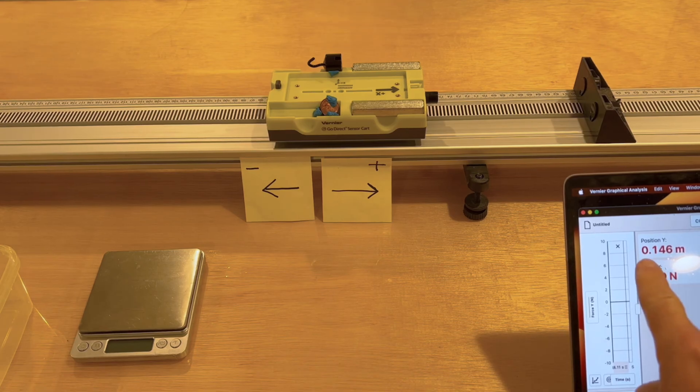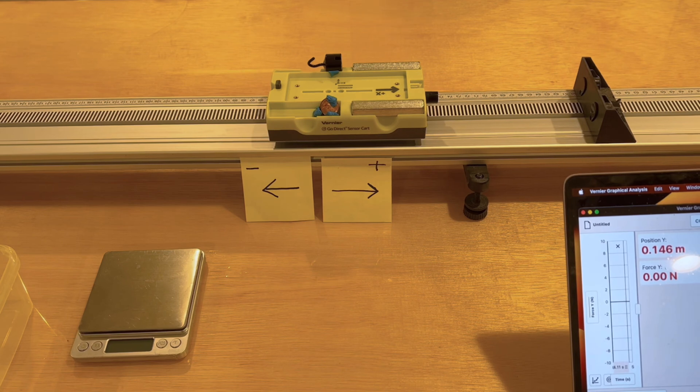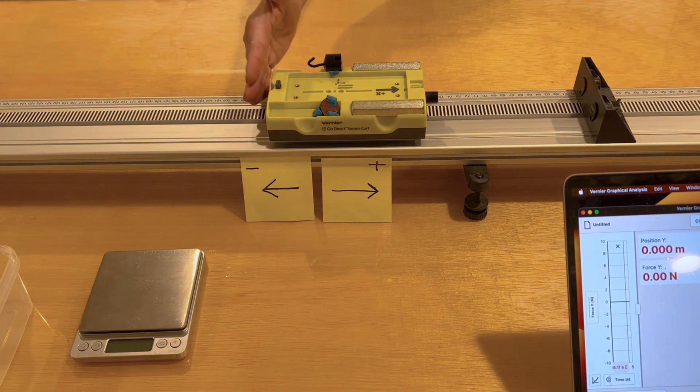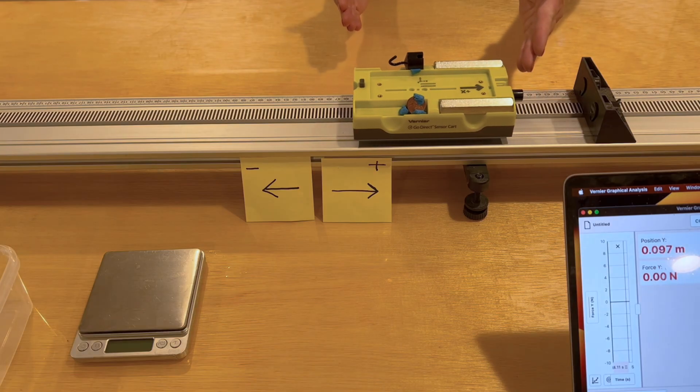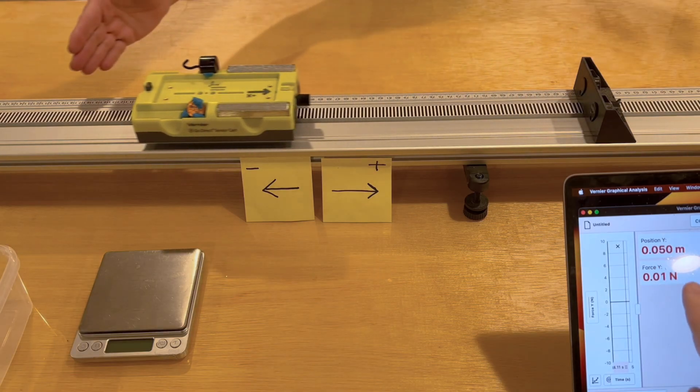We will next calibrate the initial position of the cart. We are setting its current position to zero now. Notice that when the cart is rolled to the right of this initial zero position, the value for its reported position becomes more positive, and when it's rolled to the left, it becomes more negative.